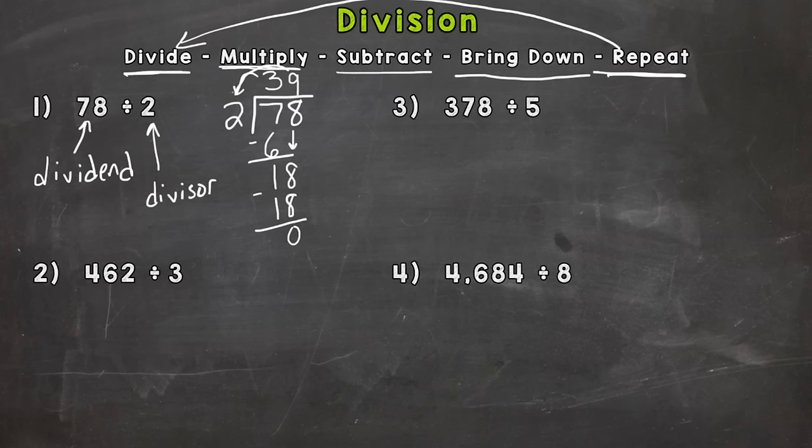And then bring down. But I went all the way over to my 1's place and I do not have anything else to bring down. So this means I am done with the problem. And this 0 tells me I do not have anything left over. So that means no remainder. The quotient or answer is 39. And that word quotient, that means an answer to a division problem.